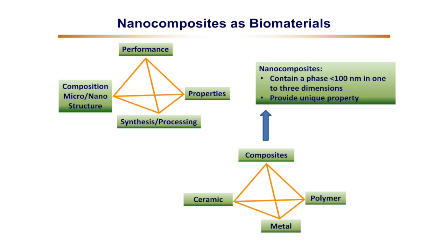A composite is a material composed of more than one phase. The component phases could be ceramic, metal, or polymer. So there could be ceramic-polymer composites, metal-polymer composites, or ceramic-metal composites.